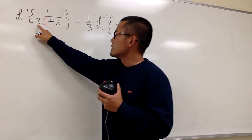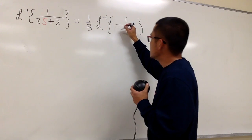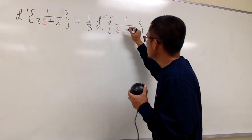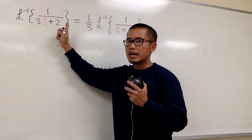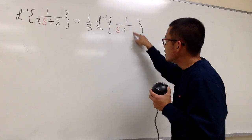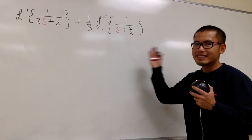First, I have 3s, and then I factor out the 3. So that means I will have an s left right here. And then I still have the plus, and originally I had the 2. Well, I factor out the 3, so here I will get 2 over 3.